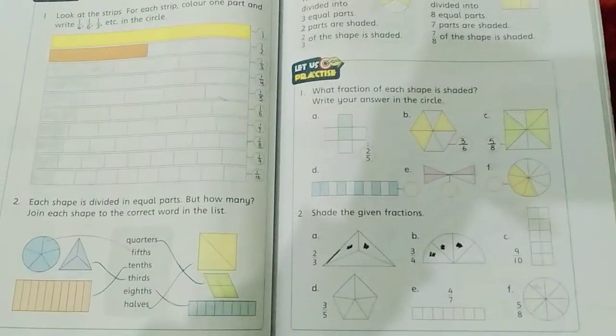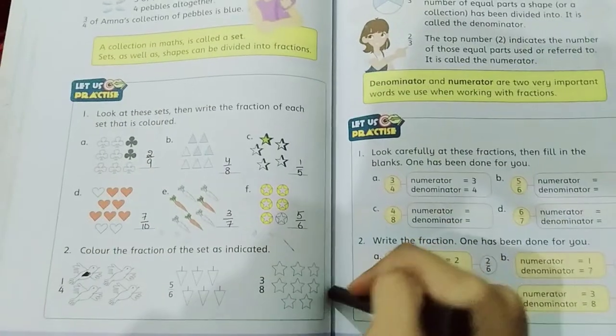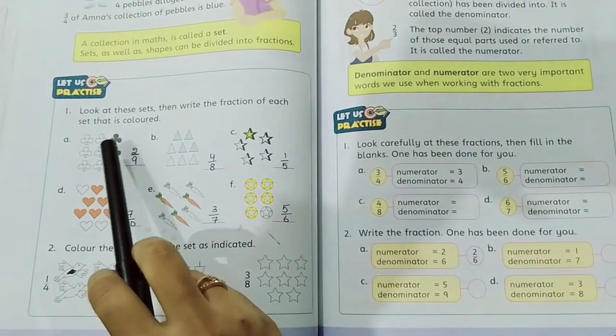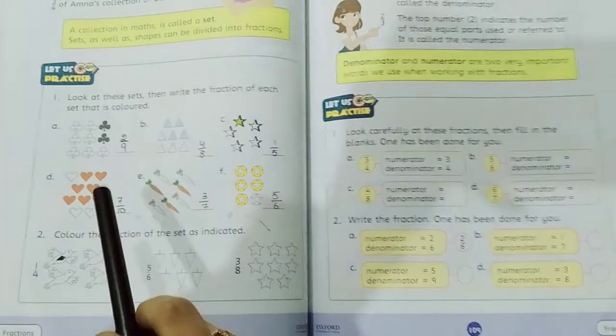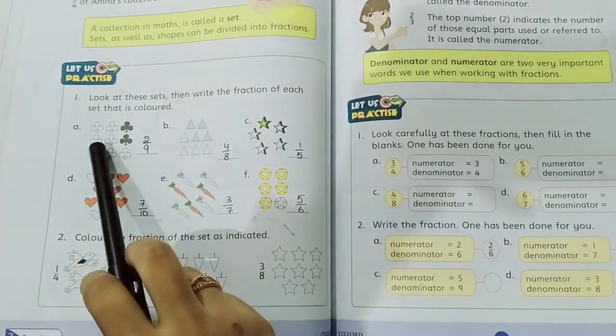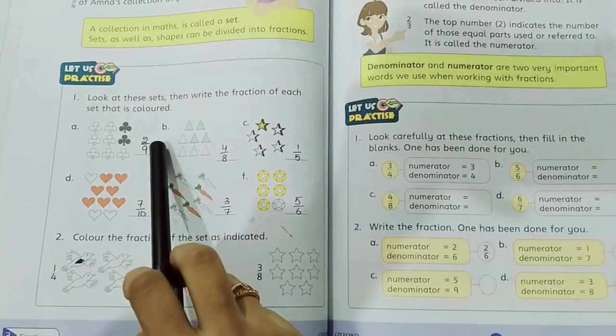Page number 108. Look at this set, then write the fraction of each set that is colored, as it is just like previous questions. Total count 1, 2, 3, 4, 5, 6, 7, 8, 9 total 9. Colored 2, so 2 by 9.